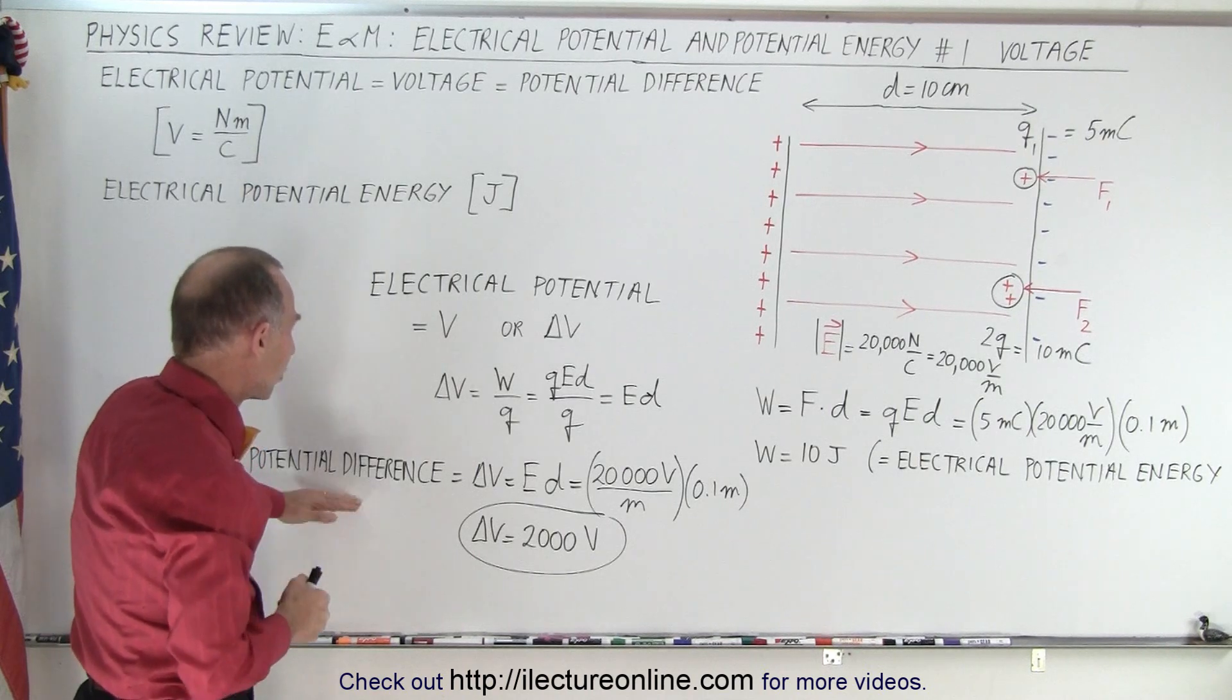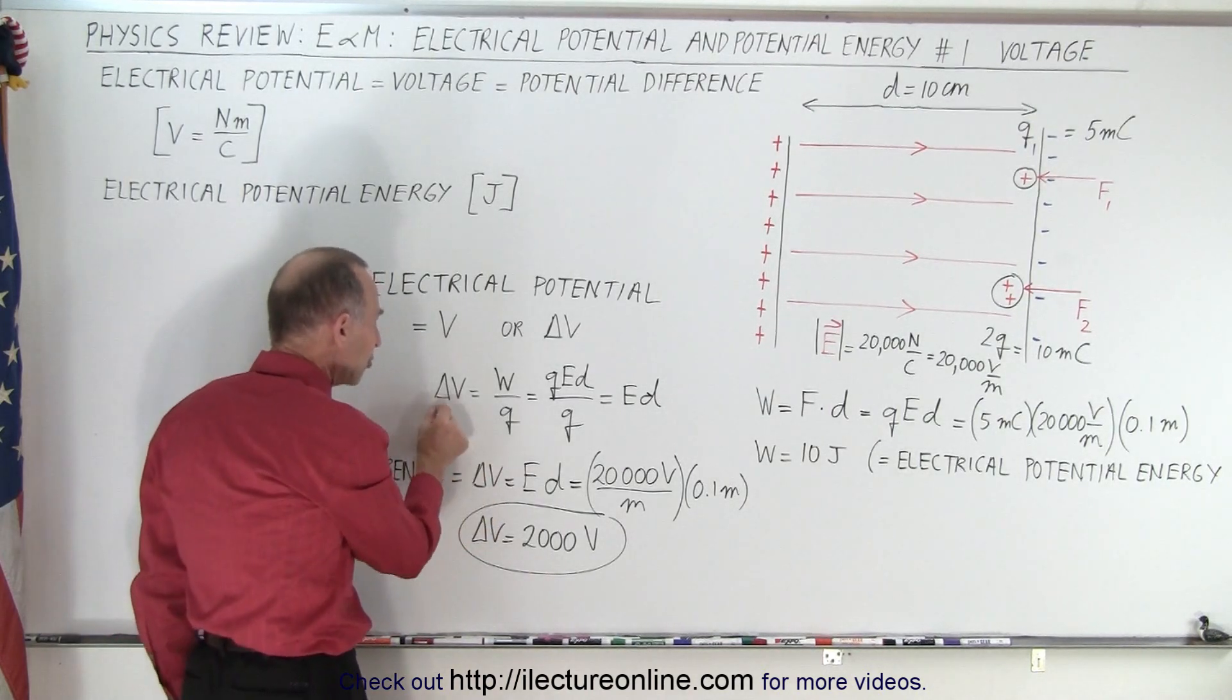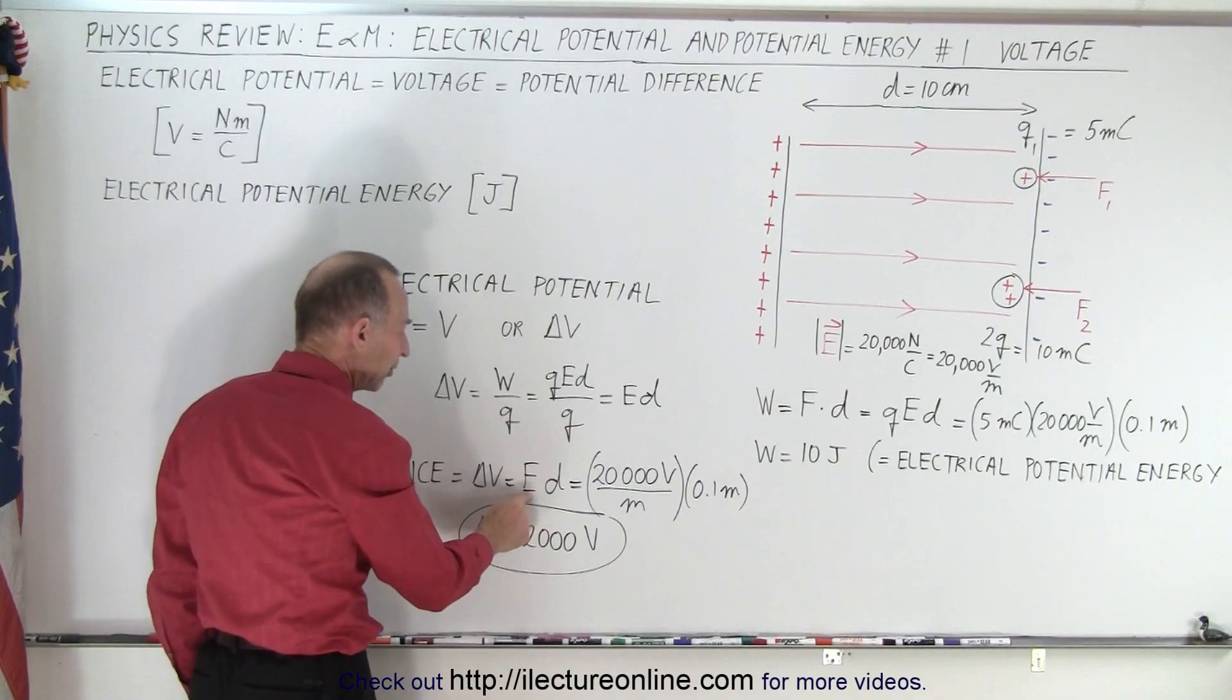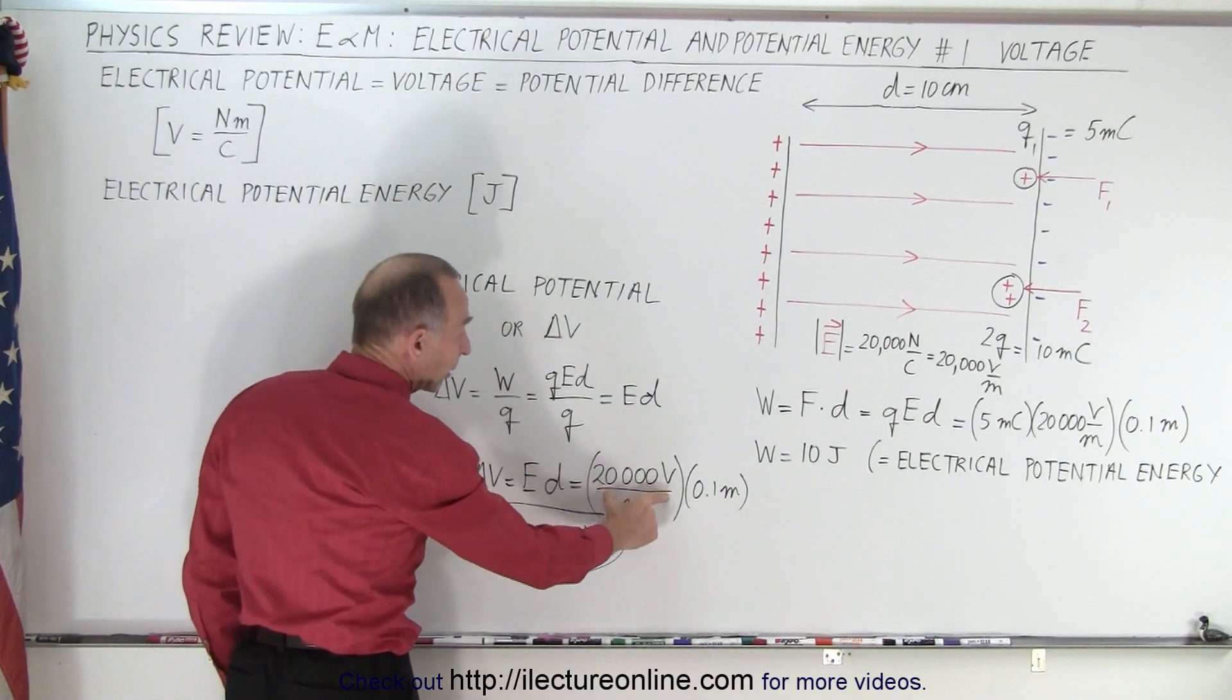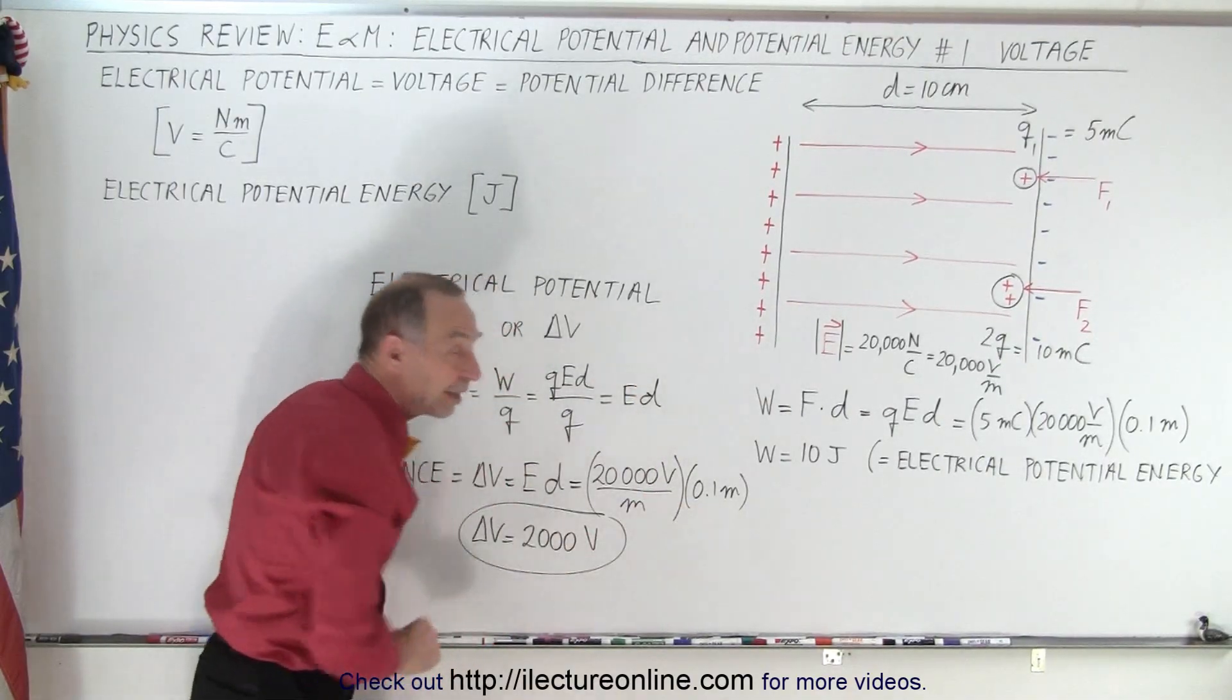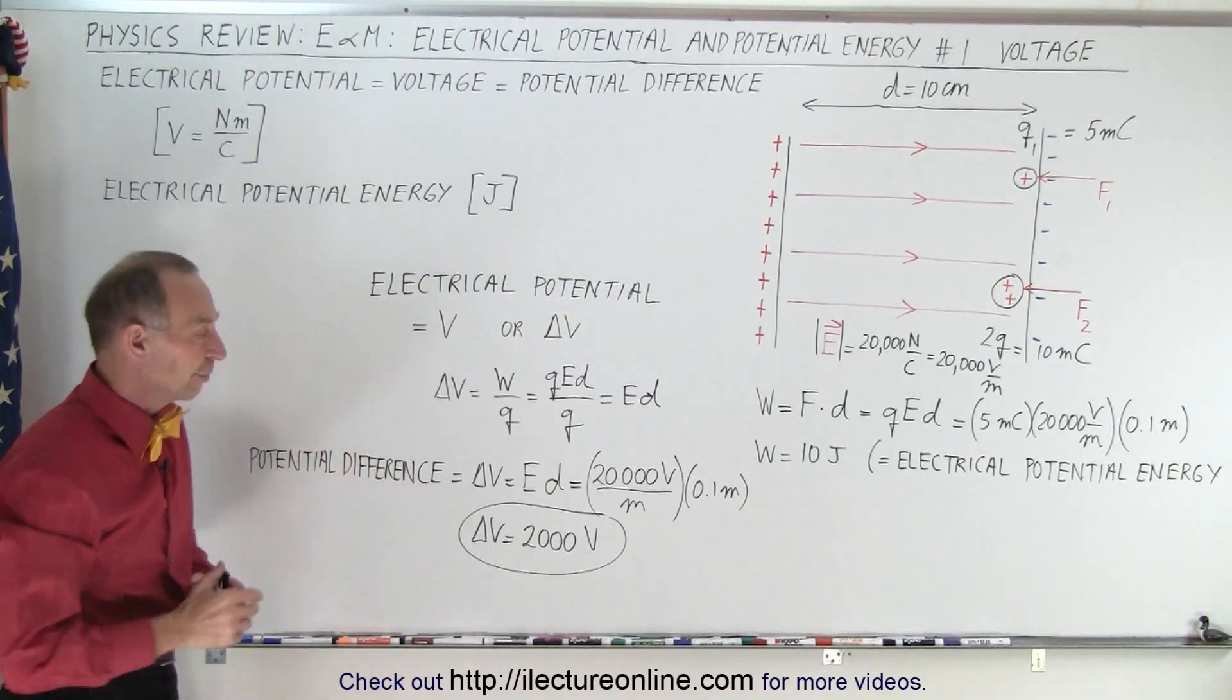So we call it potential difference. We said it's delta V, so the change in voltage, the difference in voltage, is simply the electric field strength times d. In this case, 20,000 volts per meter times 0.1 meter (that's the distance between the plates), and that gives us a potential difference of 2000 volts.